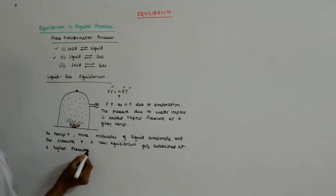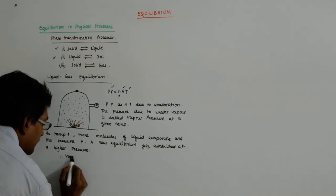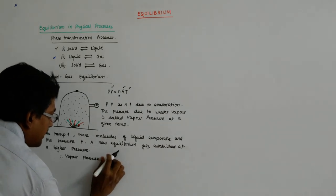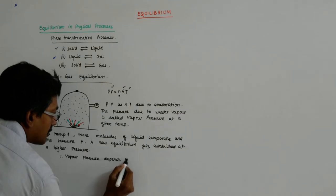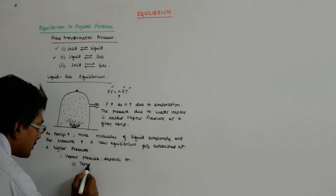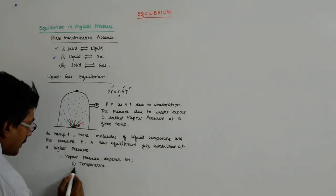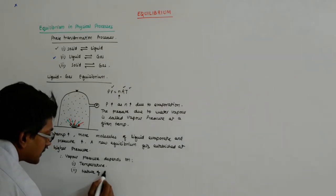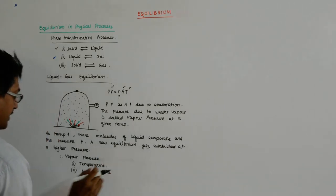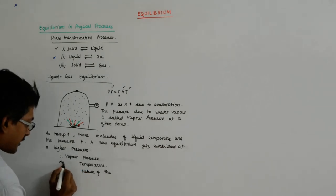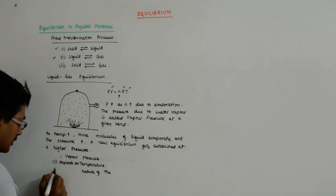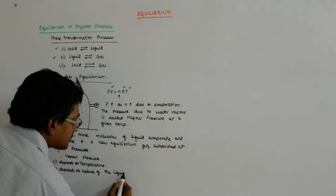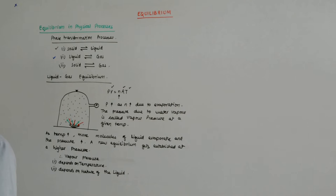Vapor pressure is sensitive to temperature. Therefore vapor pressure depends on, number one, the temperature, and number two, the nature of the liquid.